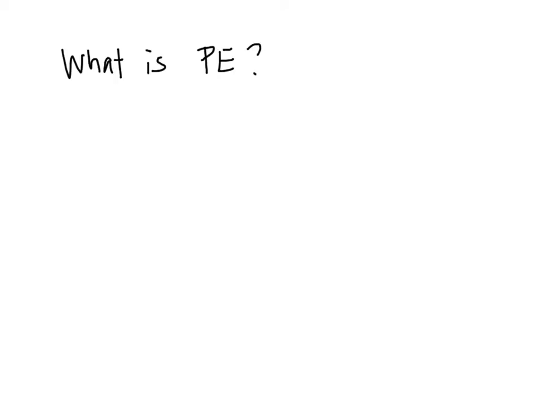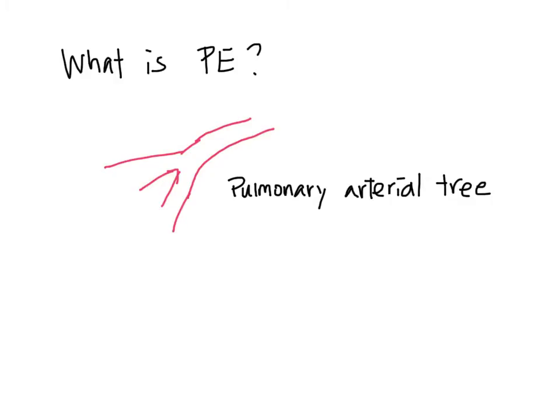What is a PE? A PE is a clot in the pulmonary arterial tree. It can be in the main pulmonary arteries, the segmental arteries, and the subsegmental arteries.